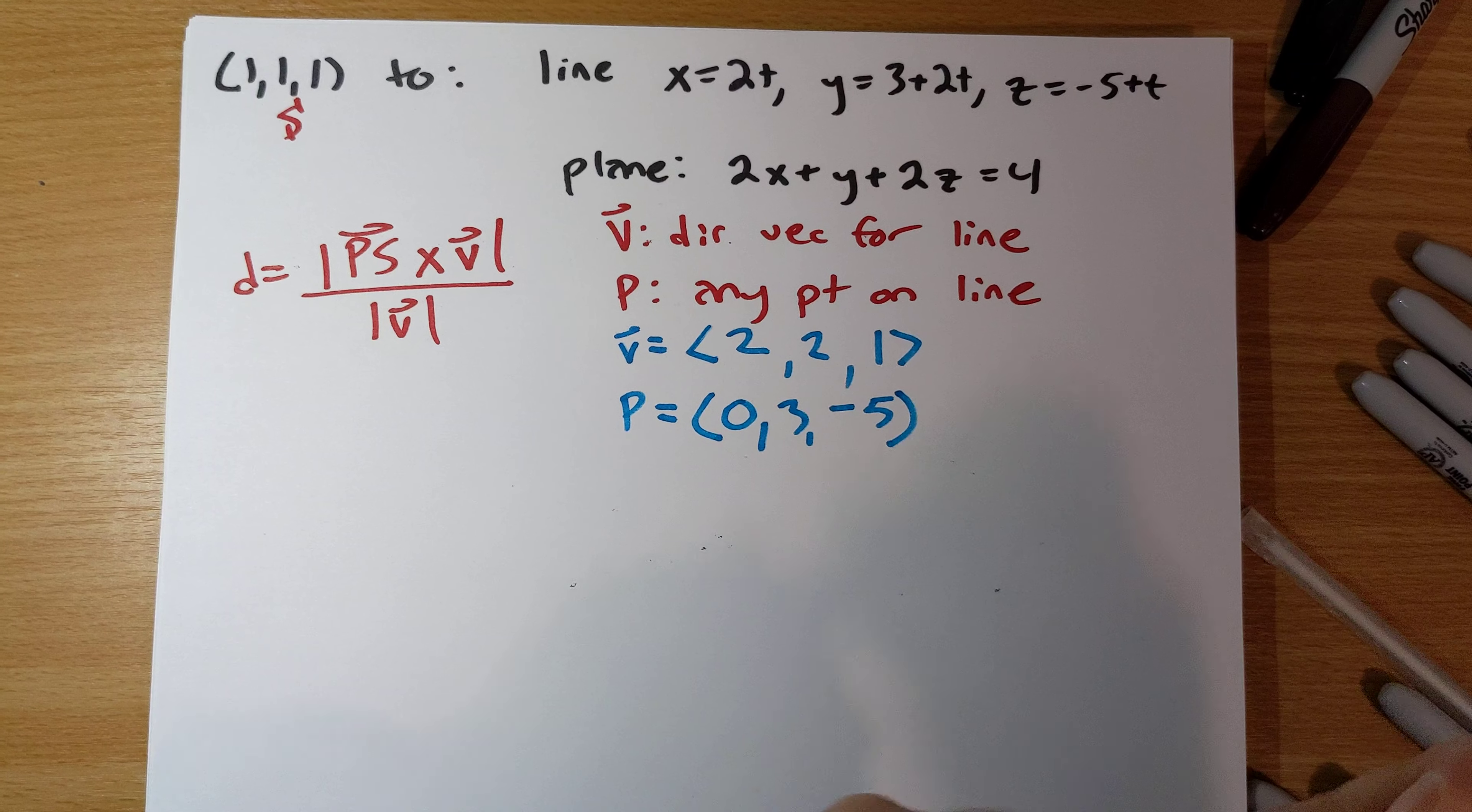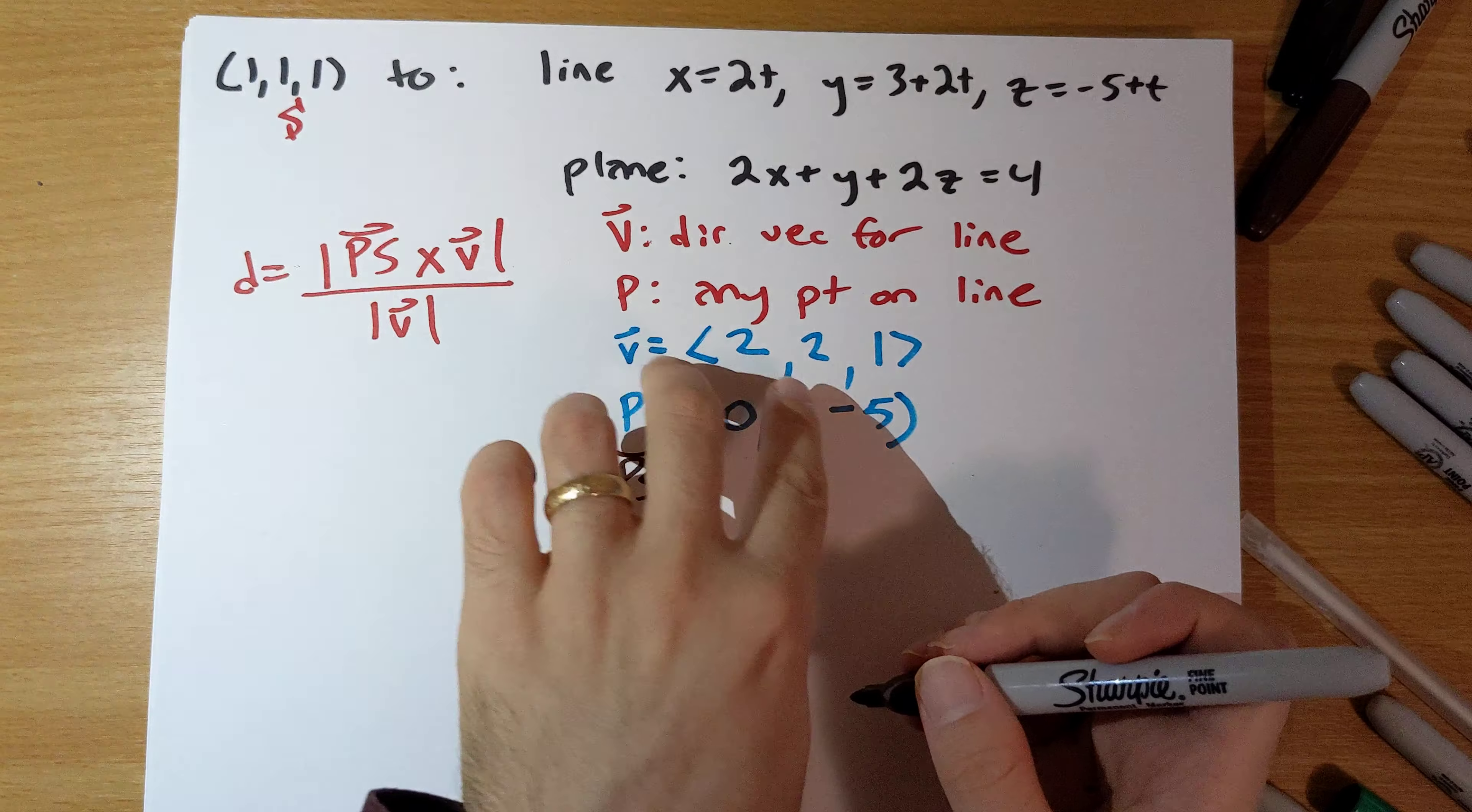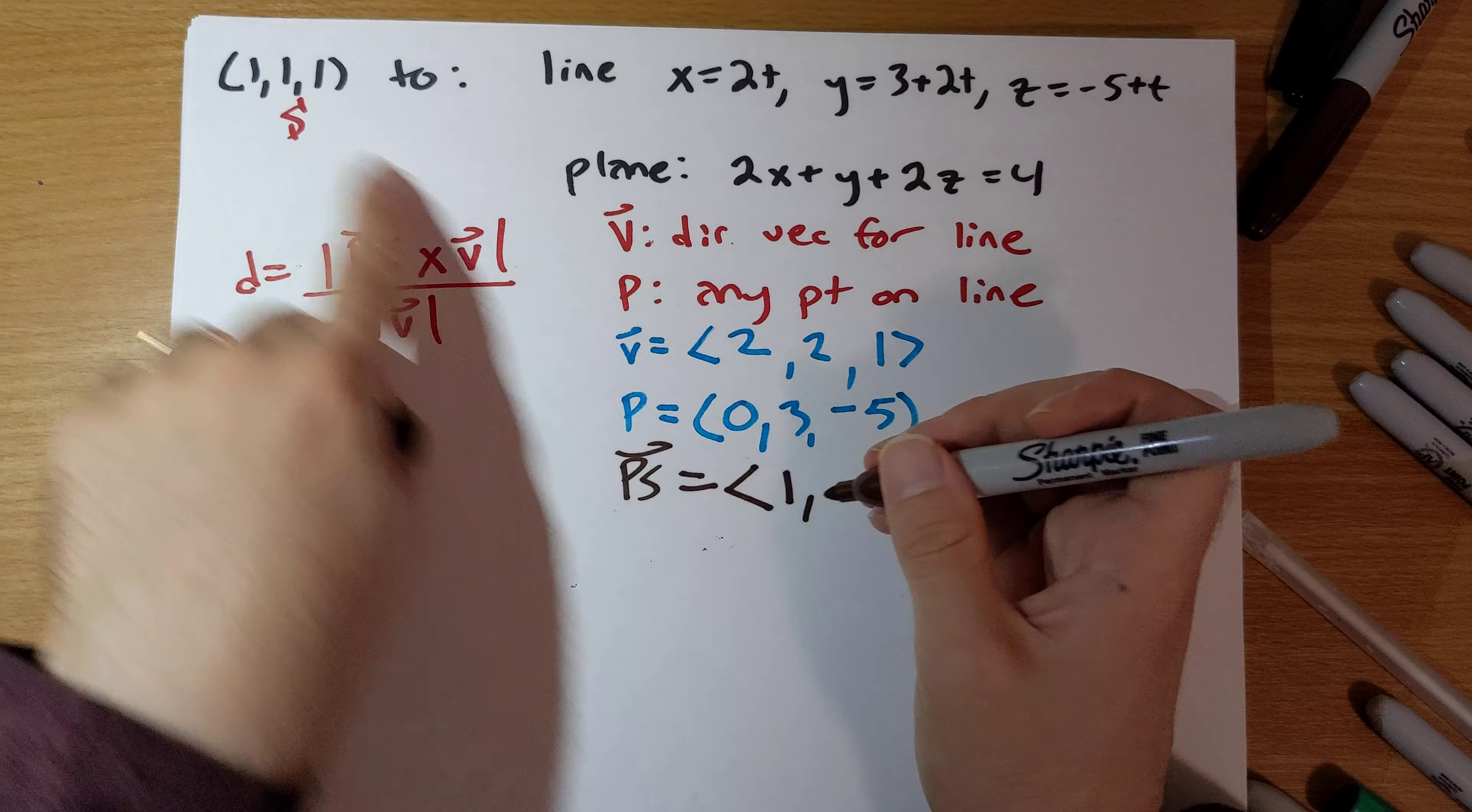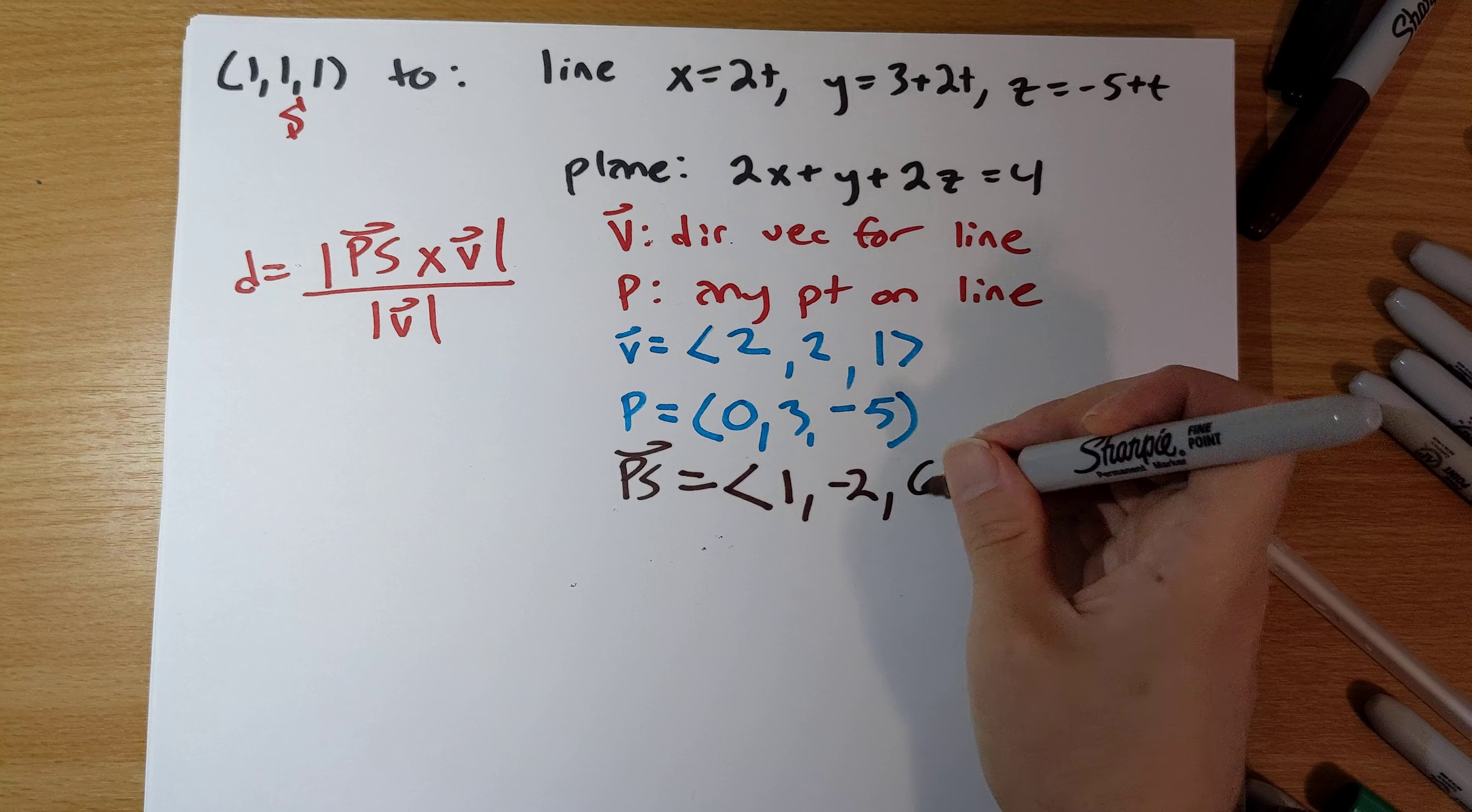And so then, at this point, to find vector PS, we do the entries of s minus the entries of p. 1 minus 0 is 1, 1 minus 3 is negative 2, 1 minus negative 5 is 6.